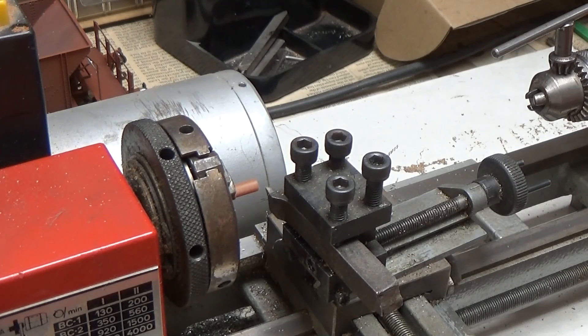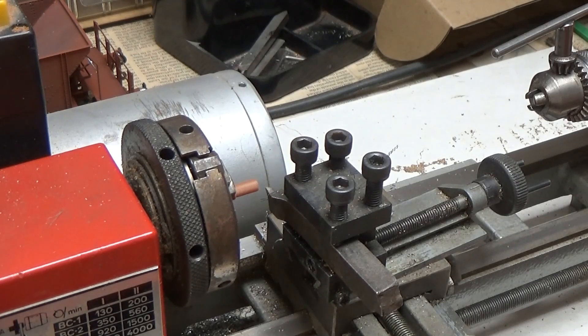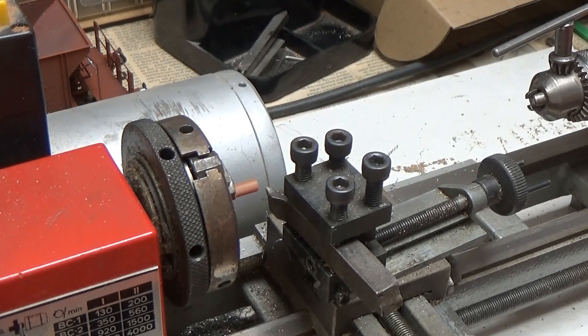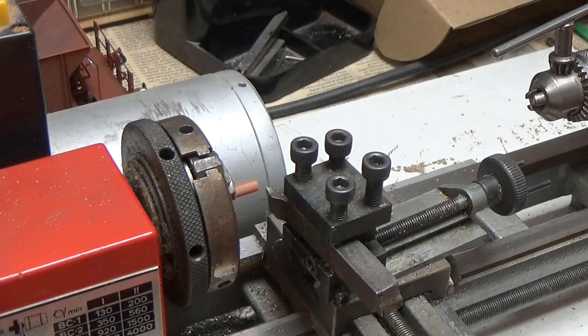We now need to produce the little peg, turning that down to 3.4mm to fit inside the drilled axle. You need to be a little bit careful when turning this kind of material, because it will bend away from the cutting tool, so always measure at the point nearest to the chuck.